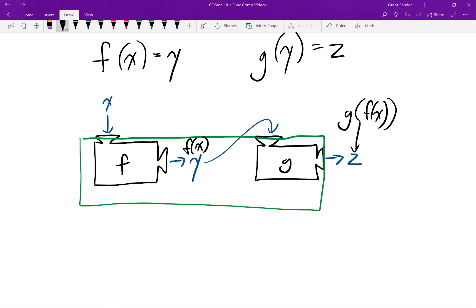Therefore the output of this new machine is g of f of x. So we write it like this. It's the output of g when the input is the output of f at an input of x. It looks like a lot but it's just chaining together two function processes.